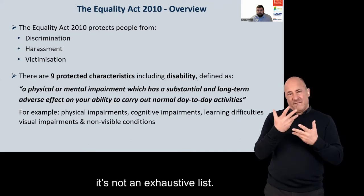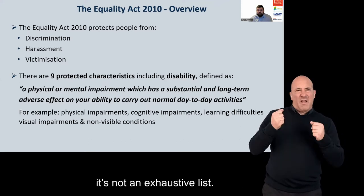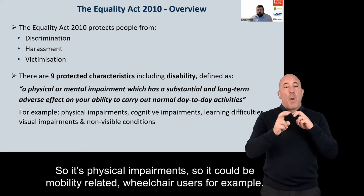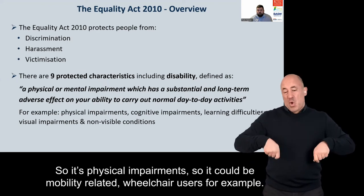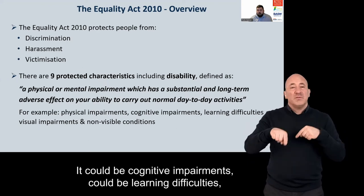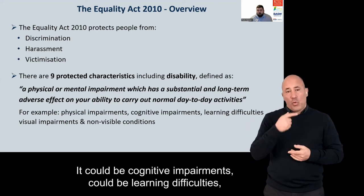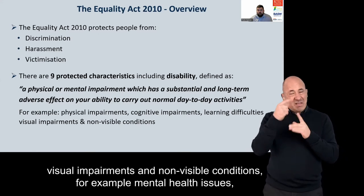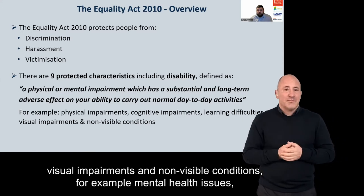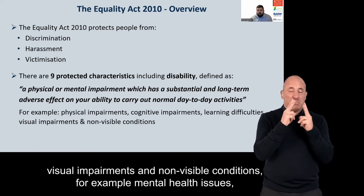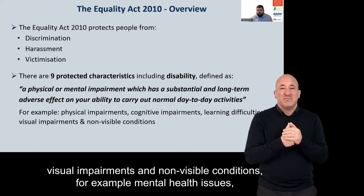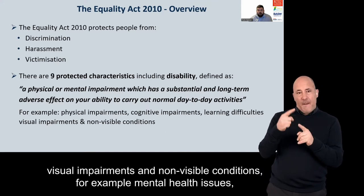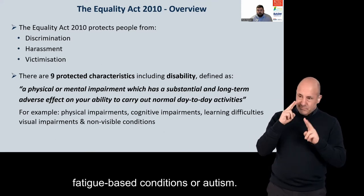It is not an exhaustive list. Examples include physical impairments such as mobility-related conditions and wheelchair users, cognitive impairments, learning difficulties, visual impairments, and non-visible conditions such as mental health issues.